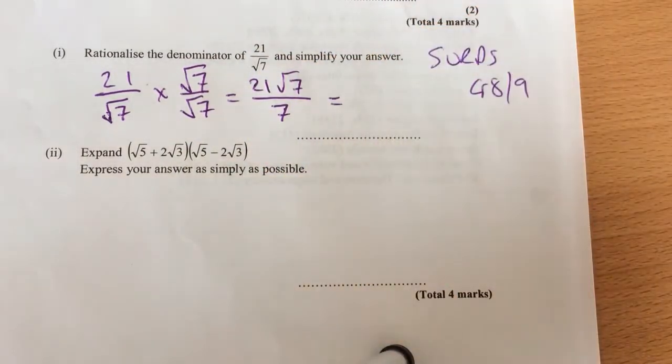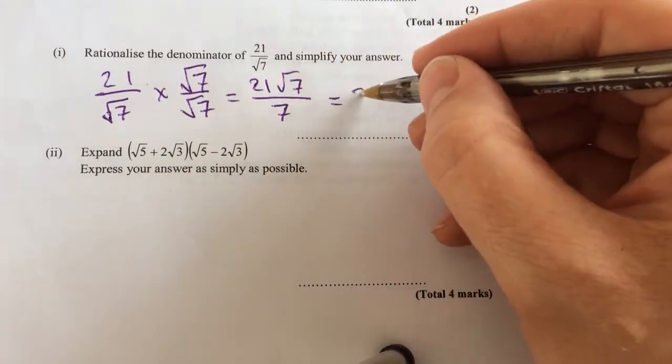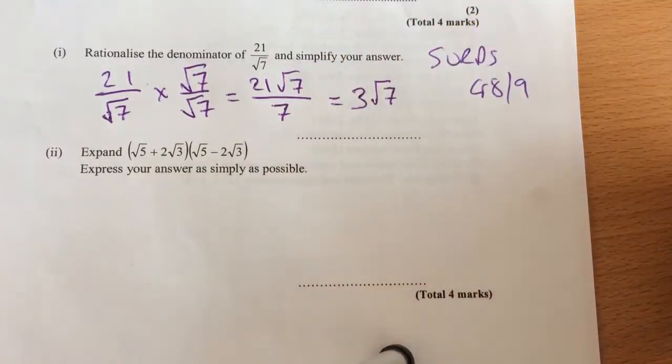And can I simplify that further? Yeah, because you've got a 21, you can divide that 21 by 7 to get 3. So that's 3 root 7. Fantastic.